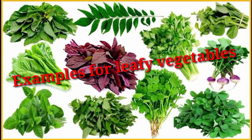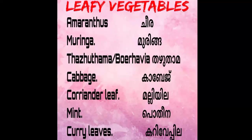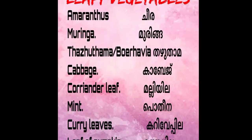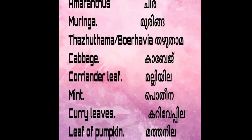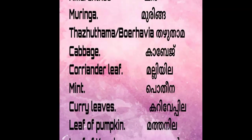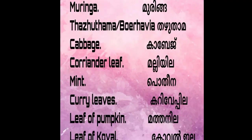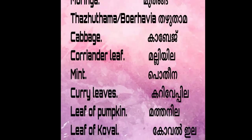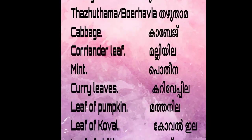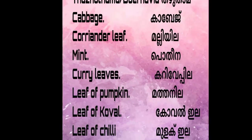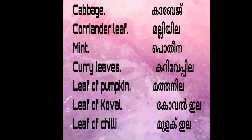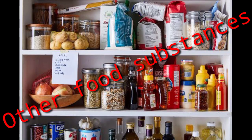Examples of leafy vegetables: Amaranthus (Chira), Drumstick leaves (Muringa), Agathi (Bohiwya), Cabbage, Coriander leaf (Malila), Mint (Pudina), Curry leaf (Karivepila), Leaf of Pumpkin (Matthanila), Leaf of Kowal (Kowalila), Leaf of Chilli (Moolagila).